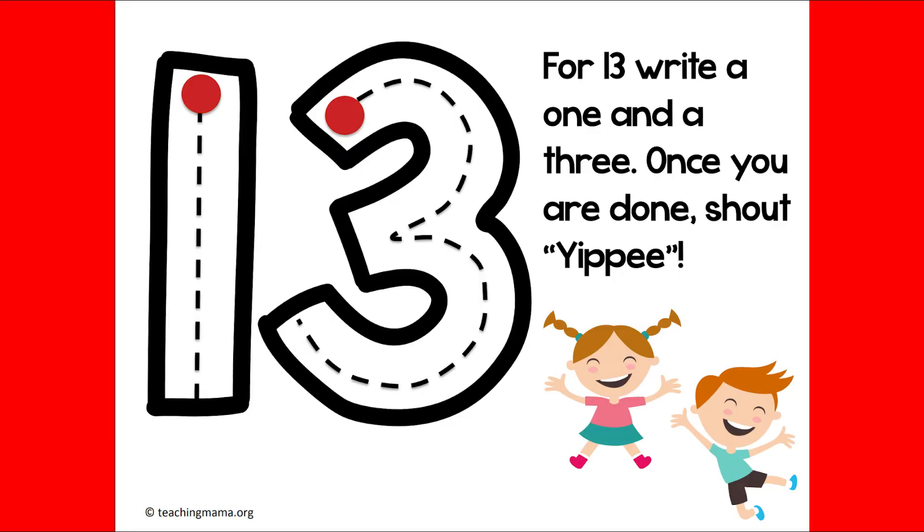Start at the top. Go all the way to the bottom. Now, jump back up to the top for our 3. And we go around the tree, around the tree. That's the way you make a 3. Once you are done, shout yippee!